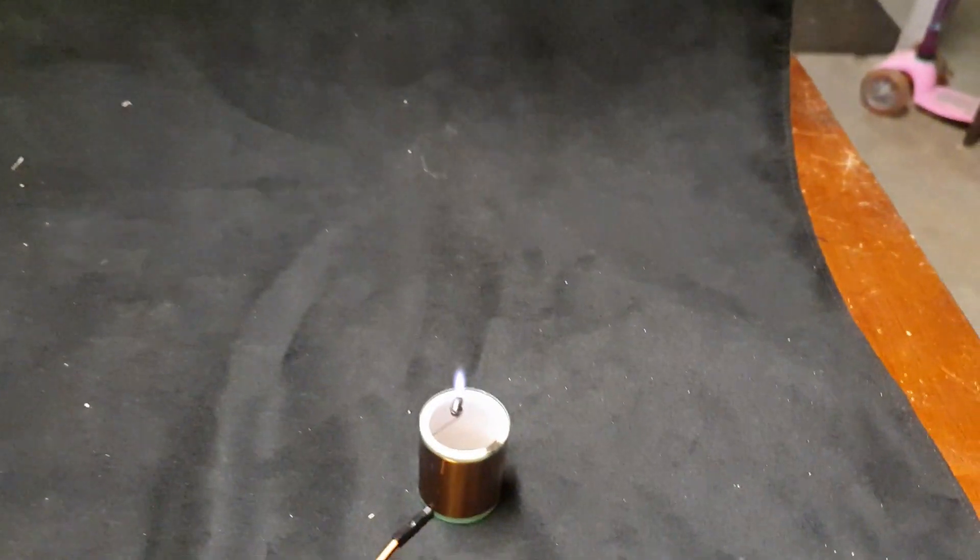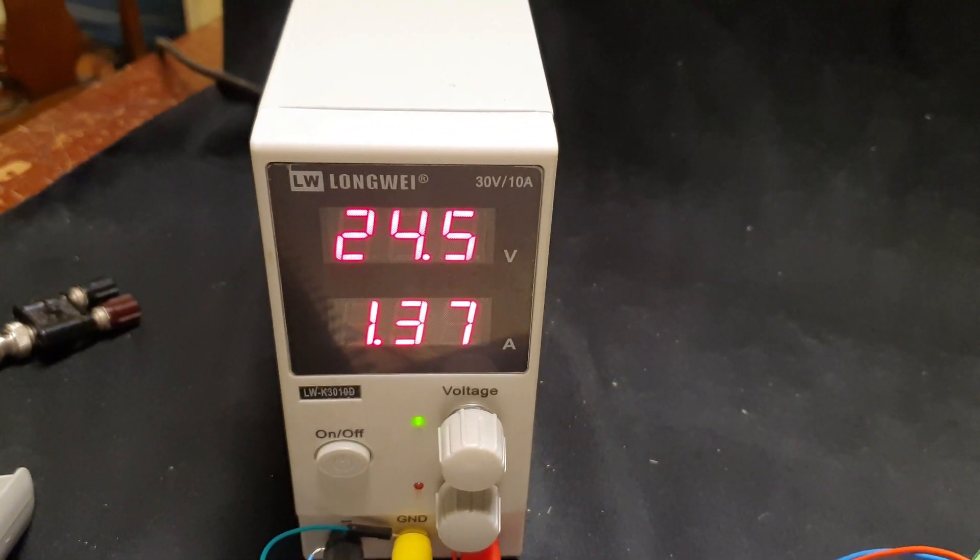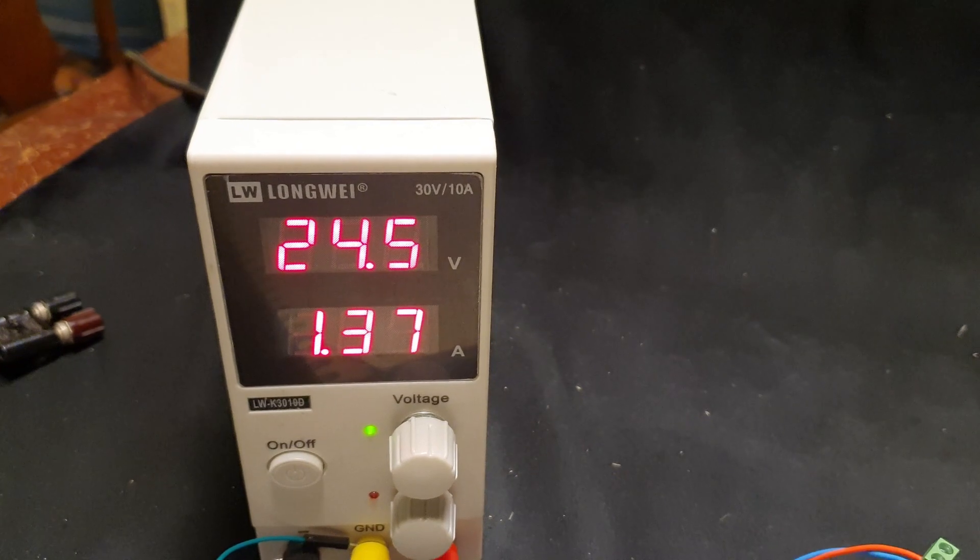Okay, and with the Tesla coil arcing, you see about 1.3 amps, 24 volts supply.